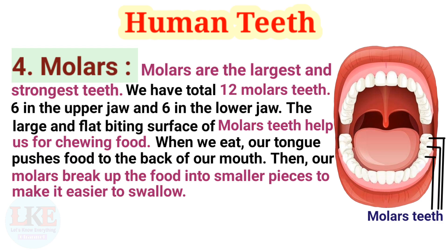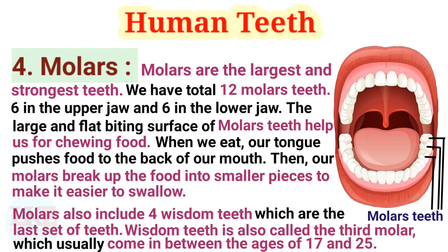Fourth, molars. Molars are the largest and strongest teeth. We have a total of 12 molar teeth — 6 in the upper jaw and 6 in the lower jaw. The large and flat biting surface of molars helps us chew food. When we eat, our tongue pushes food to the back of our mouth, then our molars break it up into smaller pieces to make it easier to swallow. Molars also include 4 wisdom teeth, which are the last set of teeth, also called the third molar, and usually come in between the ages of 17 and 25.